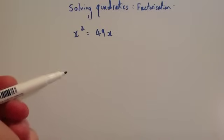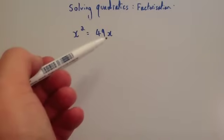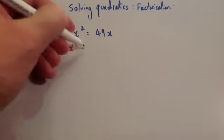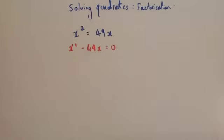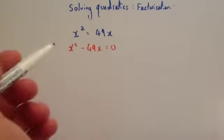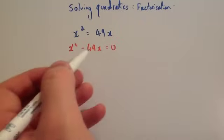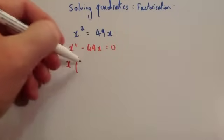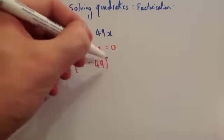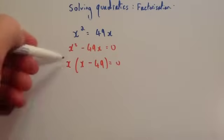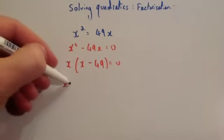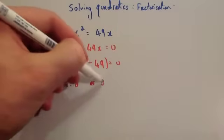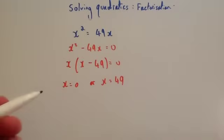This time we've got x squared equals 49x. To solve using factorisation, make it equal zero: take 49x away from both sides to get x squared minus 49x equals zero. Notice both terms have just x's in them, so this is basic factorisation — take x out as a common factor to get x(x minus 49) equals zero. Either x equals zero, or x minus 49 equals zero giving x equals 49. So the two solutions are x equals 0 or x equals 49.